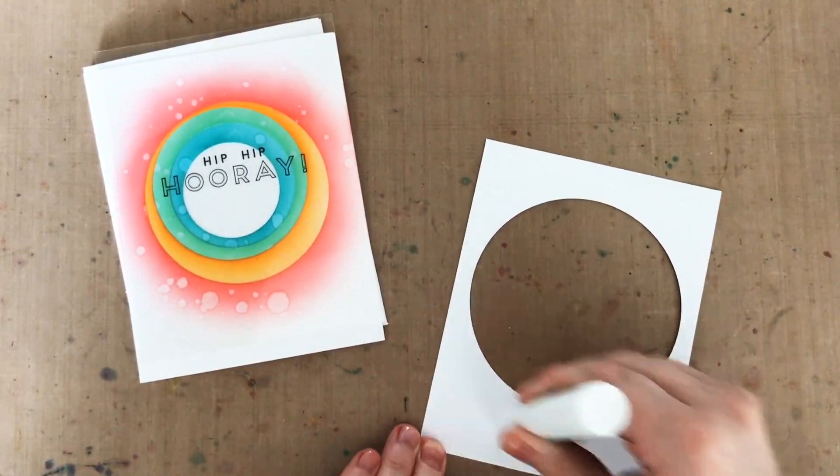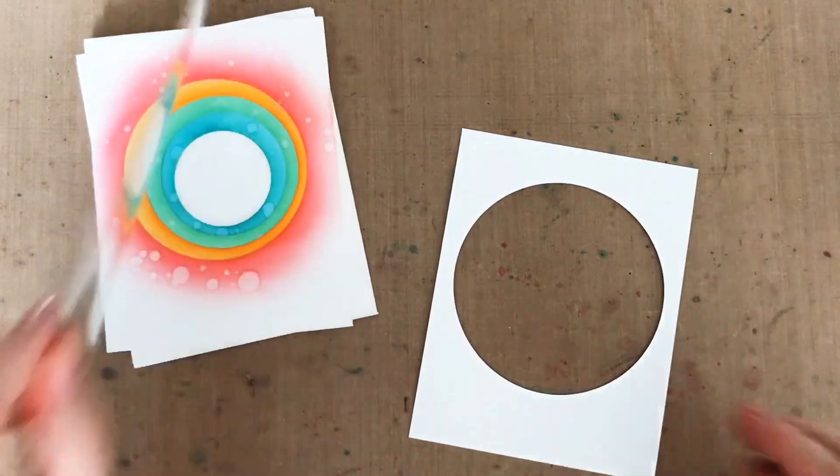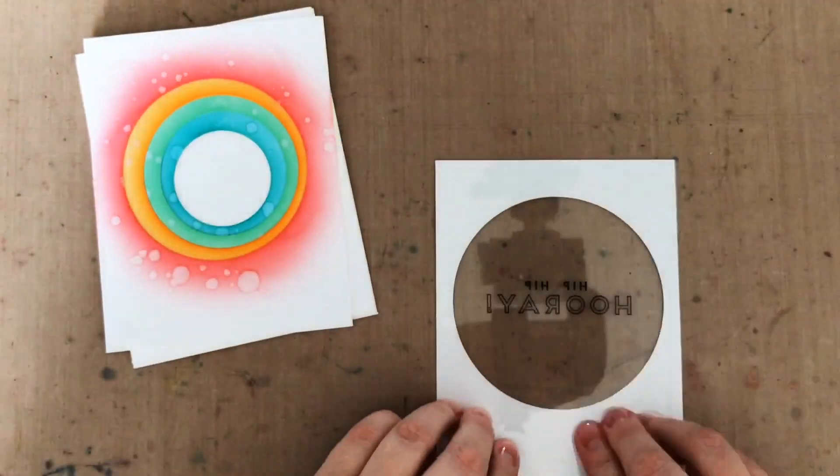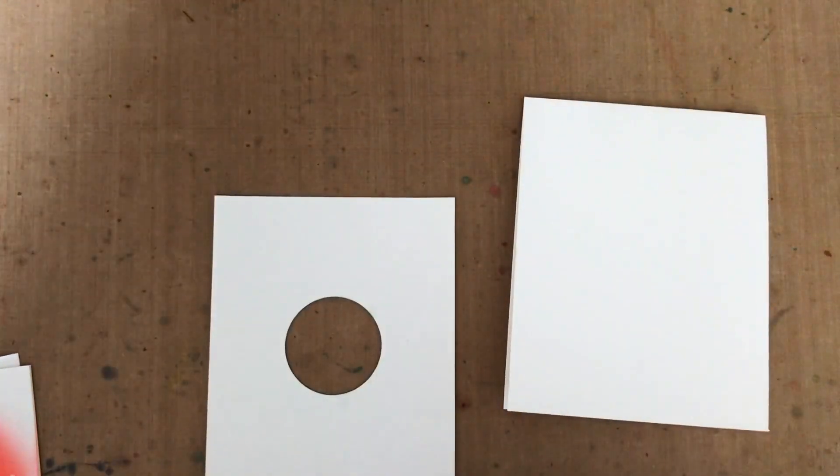Now normally I'm a dry adhesives kind of girl. Like, I like double-sided tape a lot. But I'm going to use a liquid glue this time just because it gives you a little more wiggle room to kind of move things around and make sure everything is lined up properly, which is important when you're doing a layered shaker.